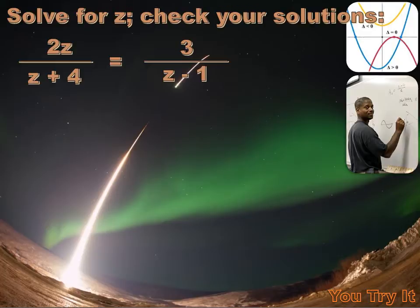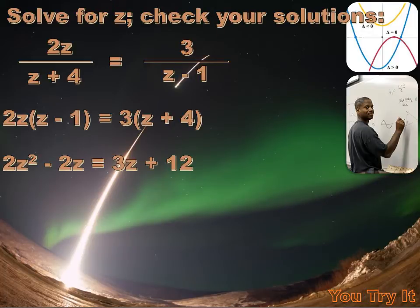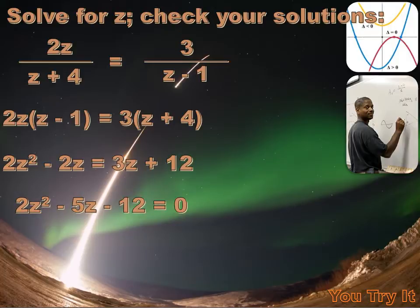We're asked to solve for z, and we just got through discussing cross products, so I think that's probably a pretty good way to try to solve this. Our cross products are 2z times z minus 1, and that's going to equal 3 times z plus 4. Let's carry out the math and we get 2z squared minus 2z equals 3z plus 12. We can simplify that and bring all our like terms on one side to get 2z squared minus 5z minus 12 equals 0.